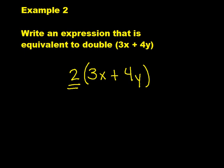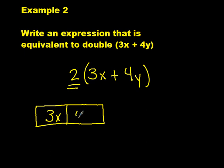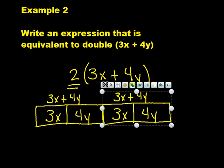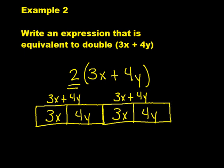What should we do first? We can make a model of 3x plus 4y. How can we change the model to show 2 times the sum of 3x plus 4y? We can make two copies of the model. Are there terms that we can combine? Yes, there are. Let's rewrite this model combining like terms.